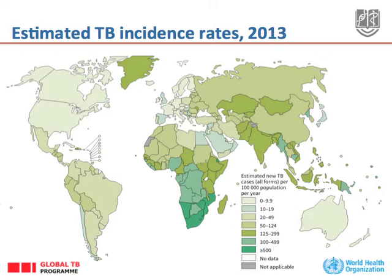Countries like South Africa, Namibia, Zimbabwe, Mozambique, Lesotho, and Swaziland have the highest rates. But other parts of Africa, as well as large parts of Asia, Latin America, and the former Soviet Union also have very high rates per capita of tuberculosis.